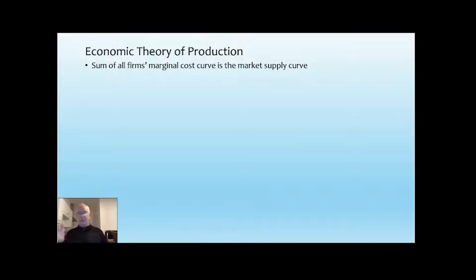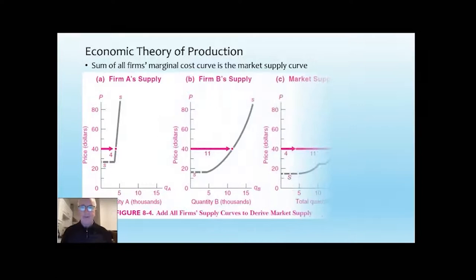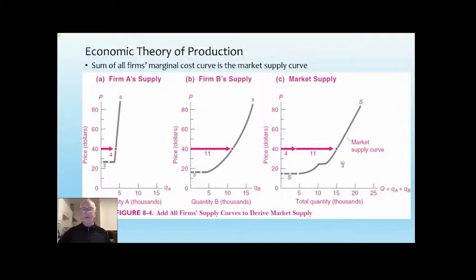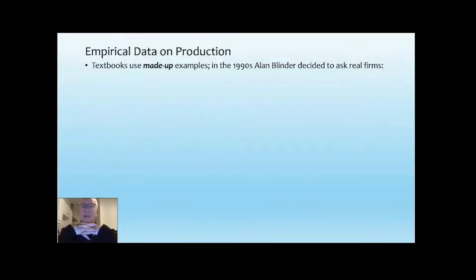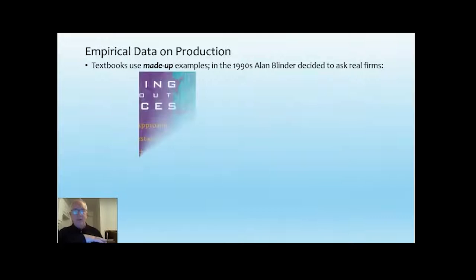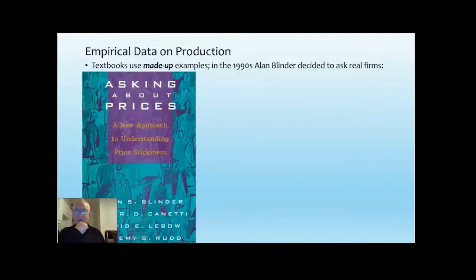That's all made-up examples — not derived from asking real firms, even wheat firms close to something you might argue is perfectly competitive. They're made up by the textbook author. In the 1990s, Alan Blinder decided to ask real firms what their actual cost structures were, and this is the book produced as a result of those surveys.